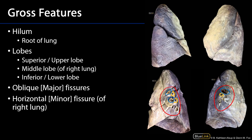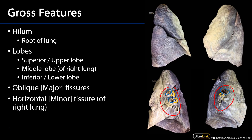The pulmonary arteries are in very close association with the tracheobronchial tree. Each lung also has two pulmonary veins, outlined in red, which carry oxygen-rich blood flowing back to the left atrium to be distributed through systemic circulation.